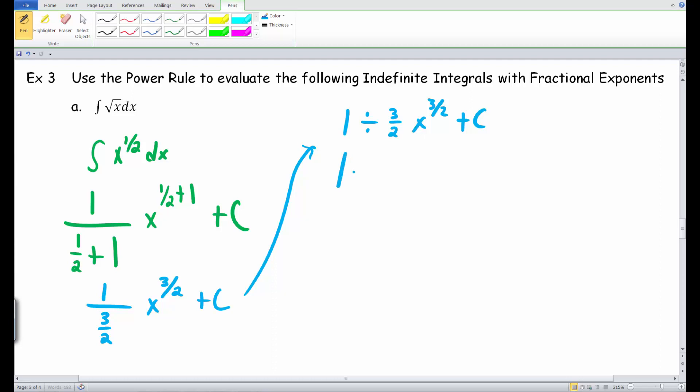Like I just said a moment ago, keep the first one, multiply it by this reciprocal, 2 thirds. 2 thirds, x raised to the 3 halves, plus some constant.